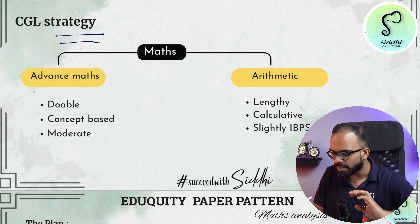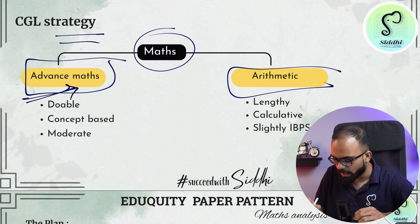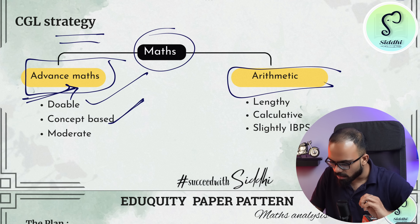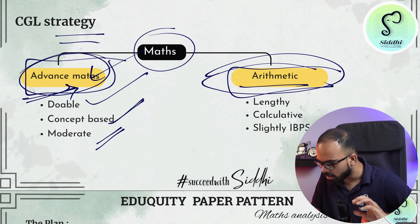The overall strategy for CGL is to divide maths into two sections. The first section is advanced math. In advanced math, the questions are doable — all concept-based and moderate. Usually we tend to ignore advanced math due to inherent fear, but this is the time to focus on advanced math rather than arithmetic, because arithmetic questions are lengthy and calculative. Some students even said the arithmetic questions are of IBPS style. So improve your advanced math — it is easy provided you are very good at core concepts and theorems. Prepare your notes and the theory of advanced math.